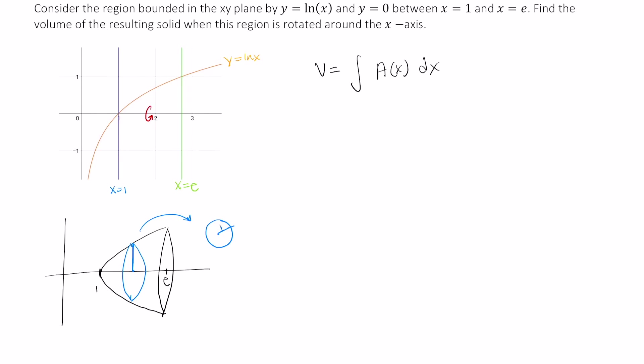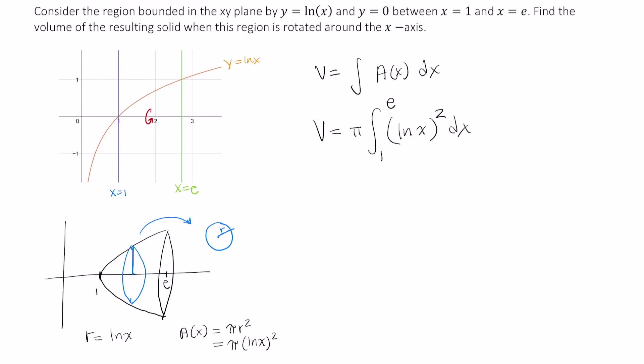And the radius, r in this case, well, r is just given by the natural log of x. So the area of this circle with respect to x is equal to π r squared, which is just π times ln of x quantity squared.